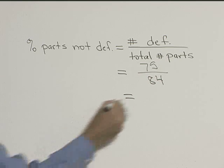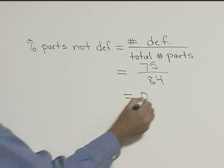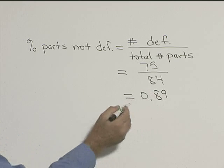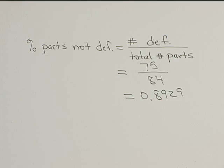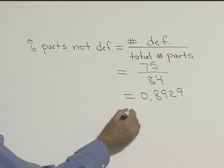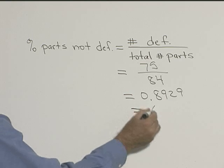So if you do the division, you get 0.8929, but remember we want this to be a percent. So we need to move our decimal two places to the right.